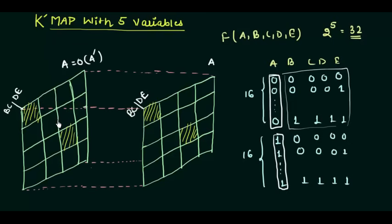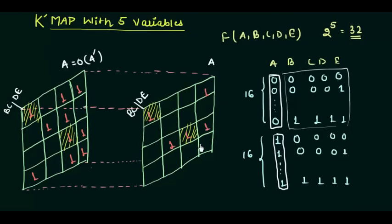I am going to fill this map randomly with 1s. Let me first fill the map completely and then I will explain how to do the grouping.